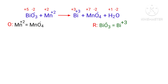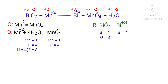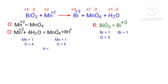Now balance the number of atoms in the two half-reactions. In the oxidation half-reaction, to balance the oxygen atoms you can produce water molecules. To balance the hydrogen atoms, you can produce H⁺ ions. Now the number of atoms are balanced in the oxidation half-reaction.